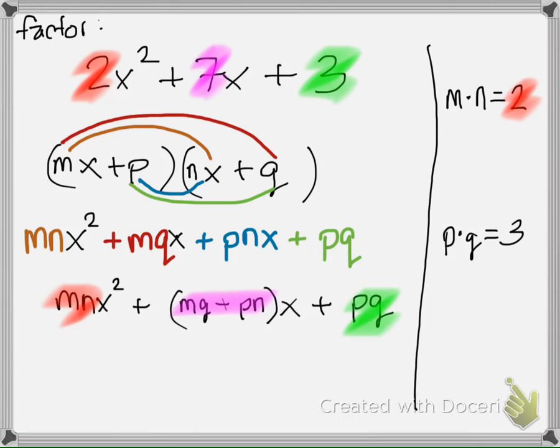We also know that p times q has to be 3. How do we know that? We know that because p times q is our c term. We're going to need to find that combination of factors for m and n and p and q that come together to equal our b term. And in this case, our b term is 7.